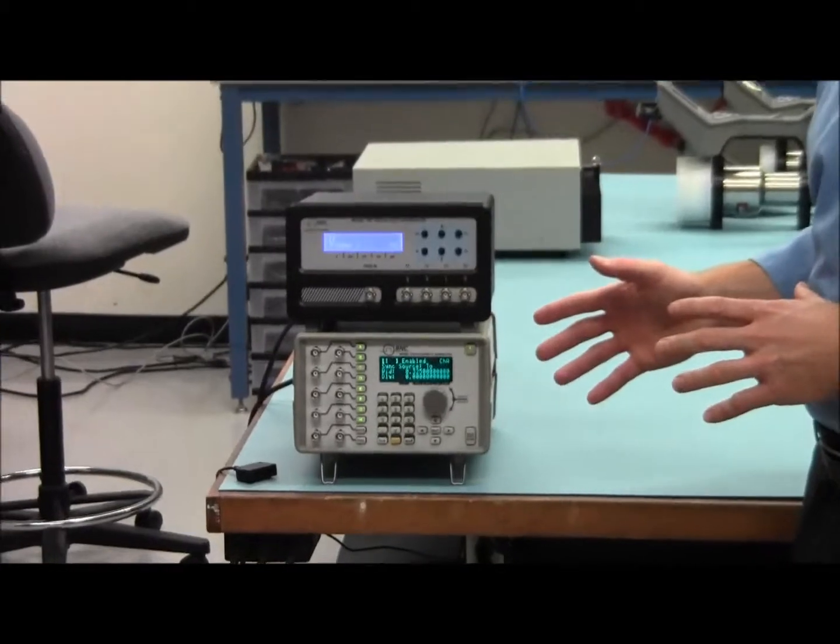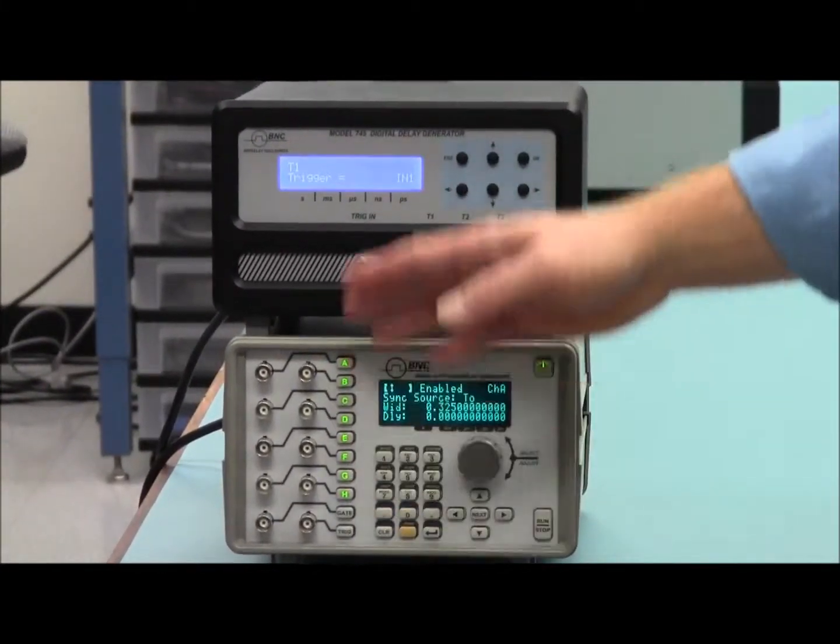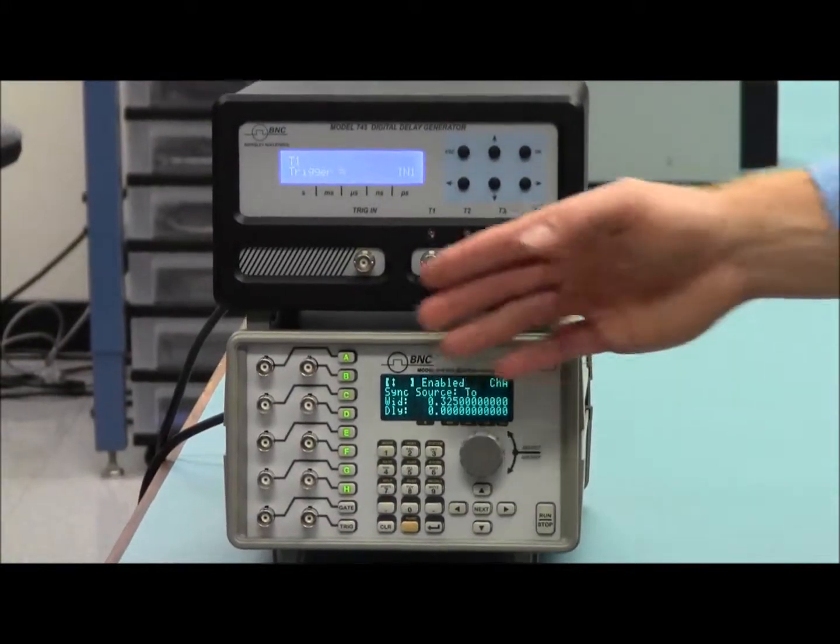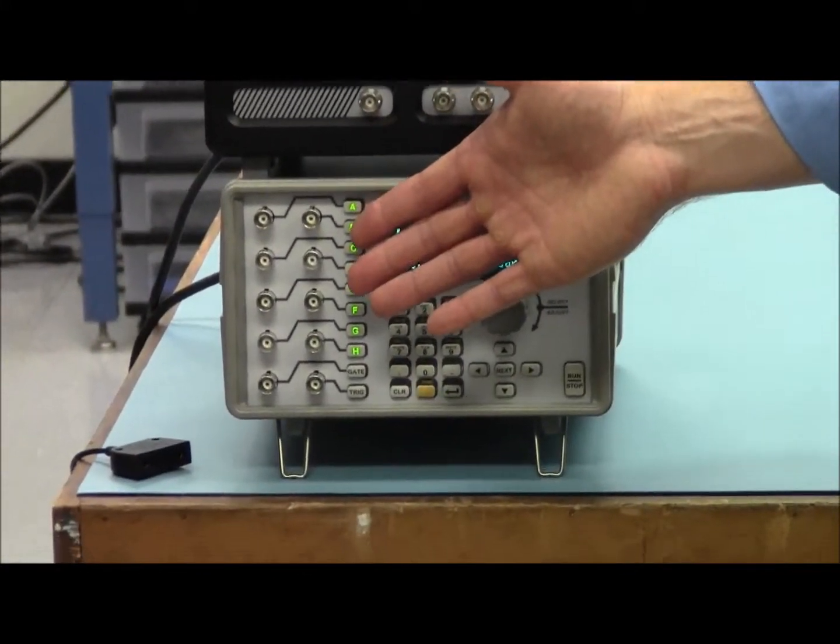Here we have our digital delay and pulse generator product lines. This is our model 575. It's designed in a modular architecture. It gives you the opportunity to choose different outputs from standard TTL electrical output to optical output, current, high voltage.